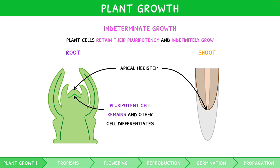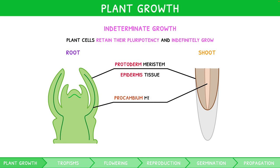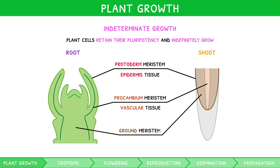The differentiated cell can become one of three additional meristems: protoderm meristem, which forms epidermis tissue; procambium meristem, which forms vascular tissue; and ground meristem, which forms pith tissue.